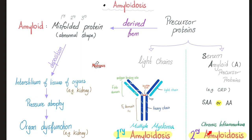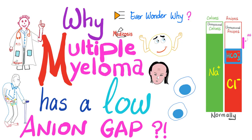Examples of conditions causing secondary amyloidosis include rheumatoid arthritis, lupus, scleroderma, Crohn's disease, ulcerative colitis, chronic tuberculosis, and sarcoidosis. By the way, do you know why multiple myeloma can cause low anion gap? If you know, amazing. If you do not know, check out my video in my playlist called Ever Wonder Why?